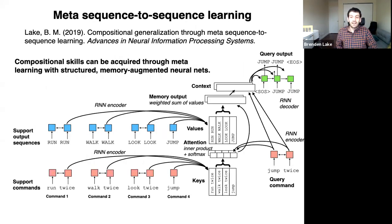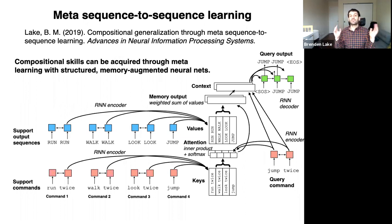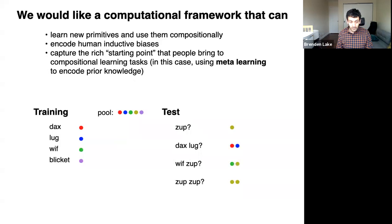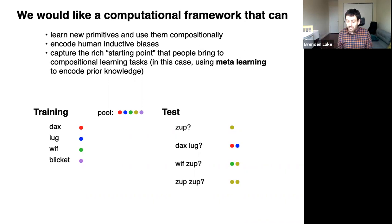I proposed a framework called meta-seq-to-seq learning, published at NeurIPS last year. The key idea is that compositional skills, rather than being built in, are acquired through meta-learning with a structured memory-augmented neural network. We wanted it to be able to learn new primitives, use them compositionally, and encode the type of inductive biases people have — so it has this rich starting point. We're going to use meta-learning to teach it to be more compositional and to encode that type of prior knowledge.